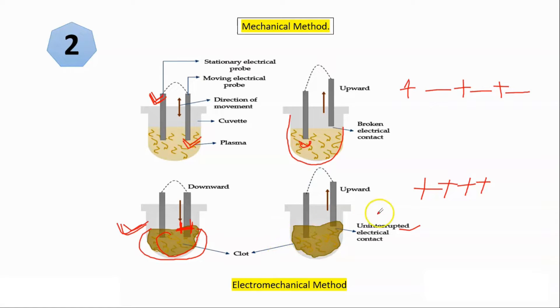This will lead to continuous electric circuit completion or you must say uninterrupted electrical contact is established after the clot formation. So at this point of time sensor will say, oh permanent electrical contact is established, that means clot is formed, and we will dictate the chronometer to stop it and note the reading. So this was again a little conventional or older method. Nowadays it is very less used in automated instruments.